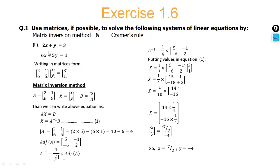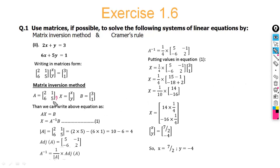For the second problem: the equations are written in matrix form. The coefficient matrix A = [2, 1; 6, 5], since when no coefficient is given with a variable, it is taken as 1. Matrix X = [x; y] and B = [3; 1]. All three matrices are now identified.